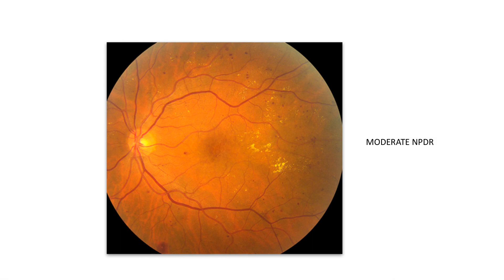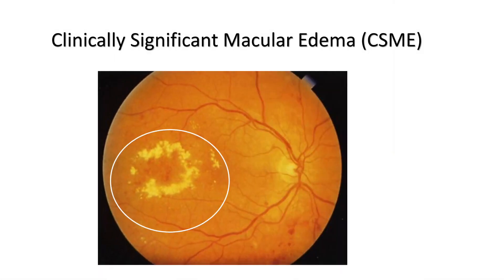Moderate NPDR — the exudation is much more here. There are lots of tiny dot hemorrhages, blot hemorrhages, and microaneurysms. In this stage you can also have macular edema, called CSME or clinically significant macular edema, where there is a lot of swelling in the macula with cholesterol deposits.